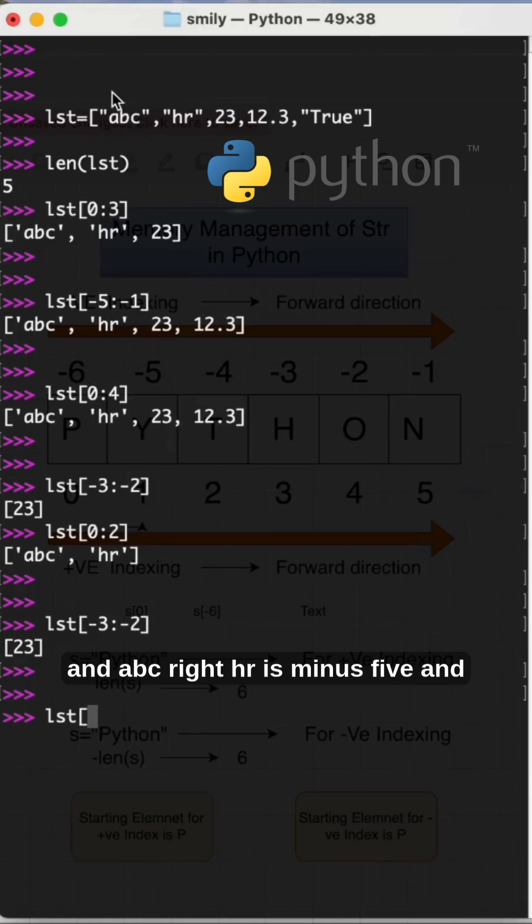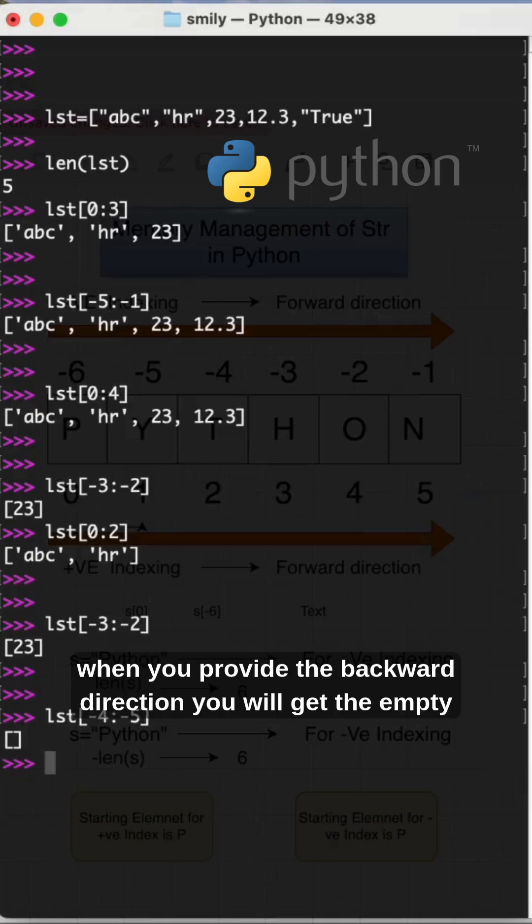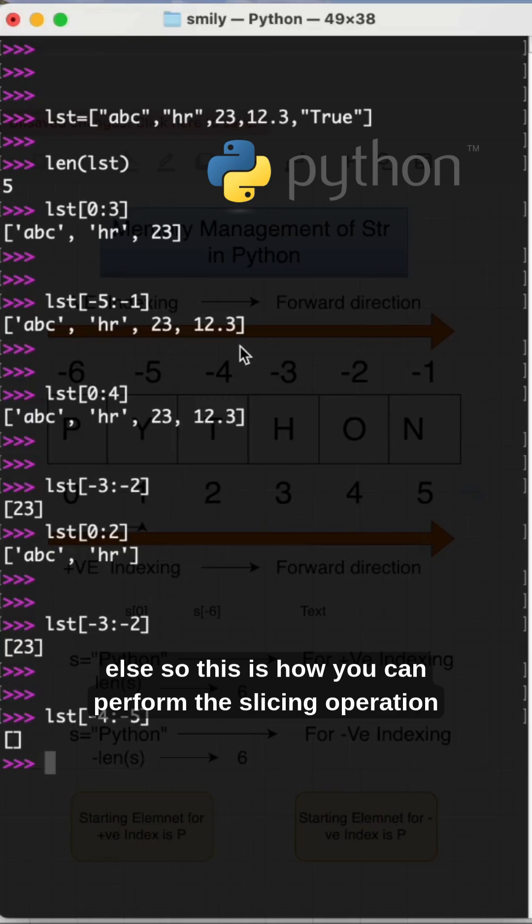You will get the space as answer, see empty. So when you provide the backward direction you will get the empty as an answer, that is space only set space nothing else. So this is how you can perform the slicing operation. If you have any comments you can provide in.